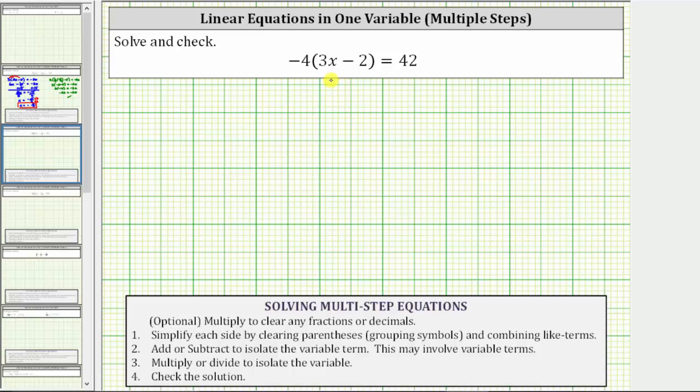To solve the equation, we isolate the variable on one side of the equation. The given equation is negative four times the quantity three x minus two equals 42.